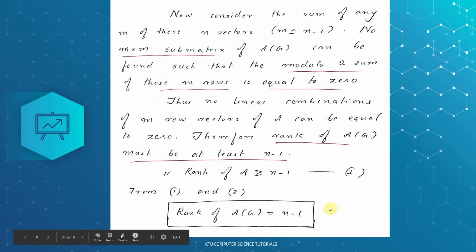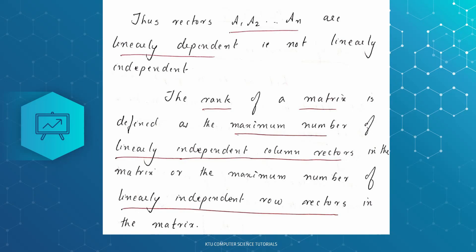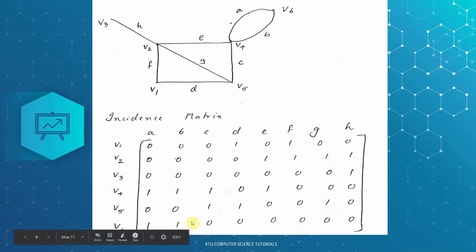Next, we have N row vectors a1 through an. We consider a subset of n-1 of them. We use the first n-1 rows as a submatrix. We have the incidence matrix and consider an m by m submatrix, where m equals n-1.